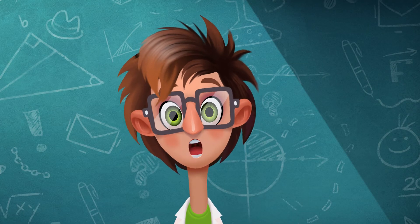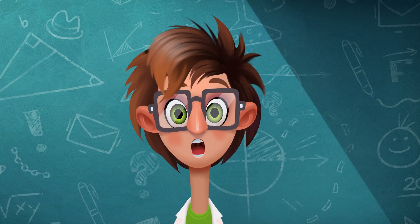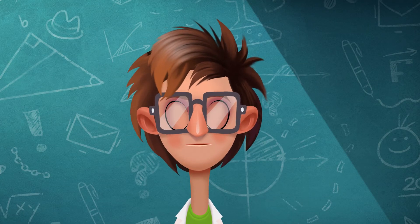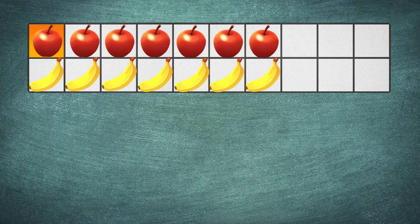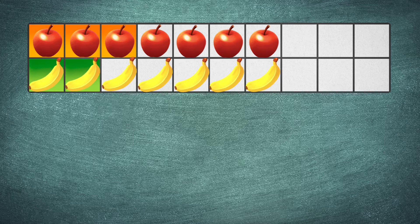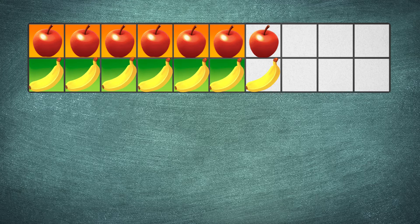Do we have more apples or bananas? Let's compare. One apple, one banana. Two apples, two bananas. Three apples, three bananas. Four apples, four bananas. Five apples, five bananas. Six apples, six bananas. Seven apples, seven bananas.